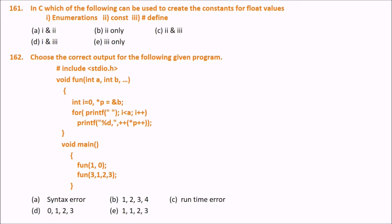In C, which of the following can be used to create constants for float values? Enumeration, const, and #define are the options. The answer is C — second and third: const and #define. Enumeration is not used for float constants.